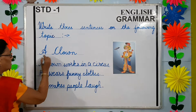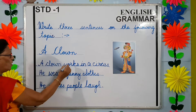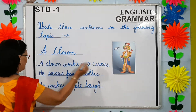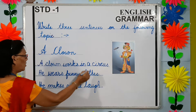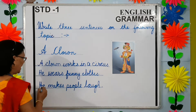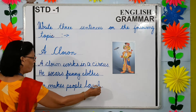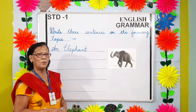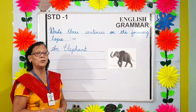A clown works in a circus. He wears funny clothes. He makes people laugh. Now let's begin with our second topic.